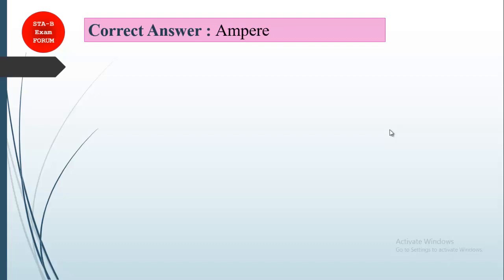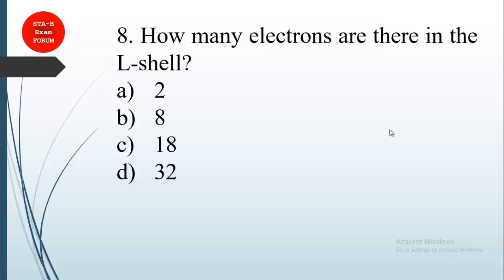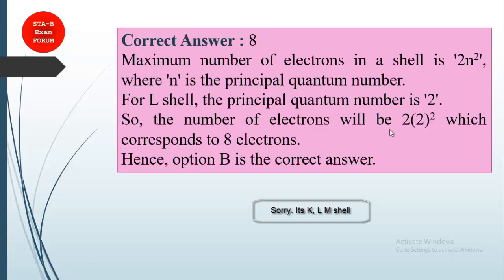Coming to the next question, this is from chemistry. How many electrons are there in the L-shell? As you know the atomic structure, there are certain shell energy levels around the nucleus: the first one is K, then L, M, N. You must know the formula, which is 2 times N to the power 2. For L-shell, the principal quantum number is 2. So the correct answer is option B, 8.